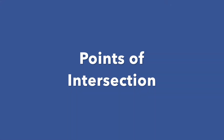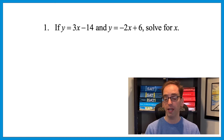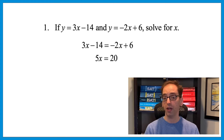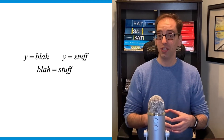Let's start with this one: if y equals 3x minus 14 and y equals negative 2x plus 6, solve for x. Both equations are set equal to y, which means they have to equal each other. So you can say 3x minus 14 equals negative 2x plus 6. Combine like terms: moving the x to the left gives 5x, and moving 14 to the right gives 20. If 5x equals 20, divide both sides by 5 — x equals 4.